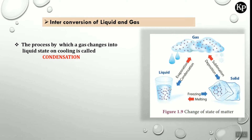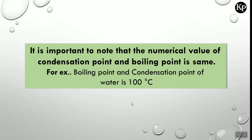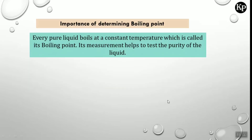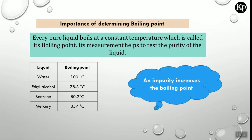On heating, liquid changes to gas — this is called evaporation. On cooling, gas converts to liquid — this is called condensation. The constant temperature at which gas changes into liquid by giving out heat energy is called the condensation point. The numerical value of condensation point and boiling point is the same — for example, the boiling point and condensation point of water is 100°C. Every pure liquid boils at a constant temperature, and this helps to test the purity of liquid. An impurity increases the boiling point.